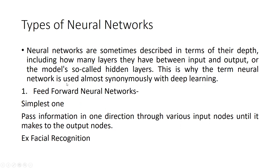Now we go through the types of neural networks. Neural networks are sometimes described in terms of their depth, including how many layers they have between input and output — the so-called hidden layers. Whether there is only one hidden layer or more than one, this determines how complex the model is. That is why the term neural network is used almost synonymously with deep learning.